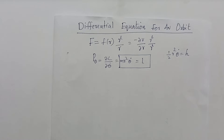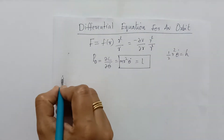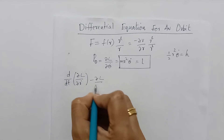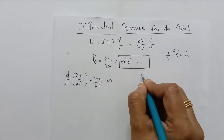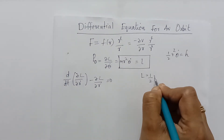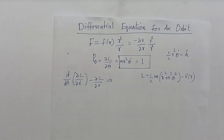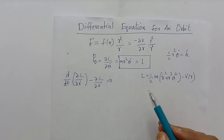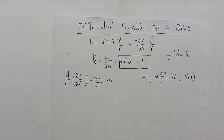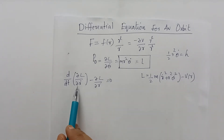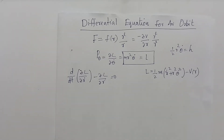From the Lagrangian we arrived at the statement of conservation of energy, which is another first integral of motion. The Lagrangian in R coordinates comes from d/dt(∂L/∂Ṙ) − ∂L/∂R = 0. The Lagrangian is of the form T − V, that is ½M(Ṙ² + R²θ̇²) − V(R). Using the first integral MR²θ̇ = L, we worked in R and θ coordinates.